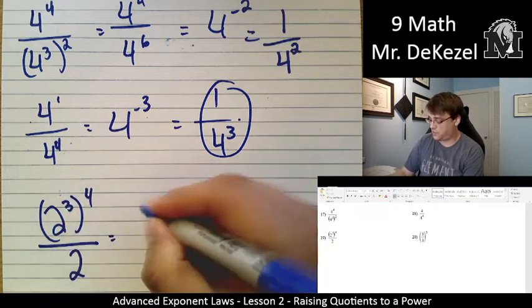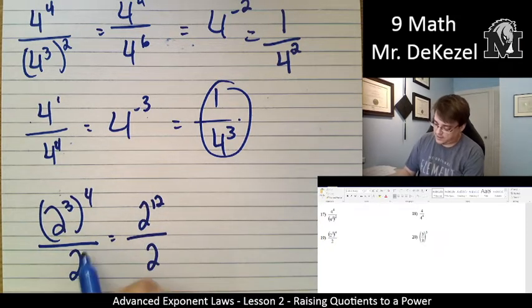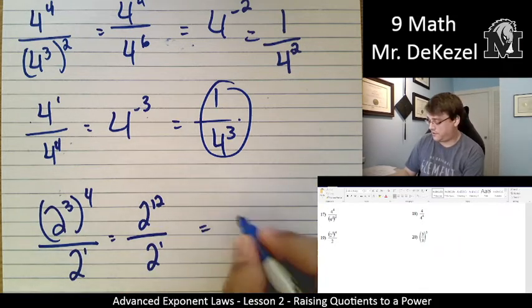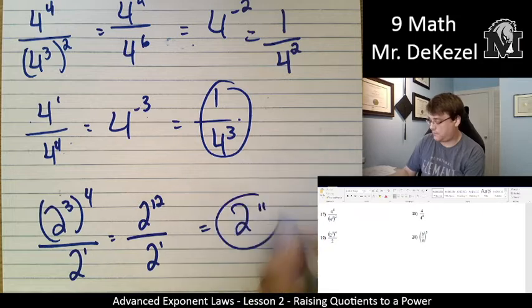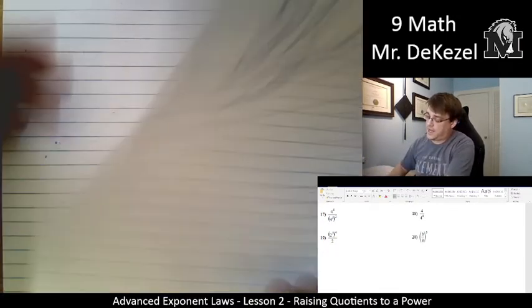So 3 times 4 is 12. And then we have a 1 here, so then 12 minus 1 is 11. That gives us 2 to the power of 11. And we have one last one.